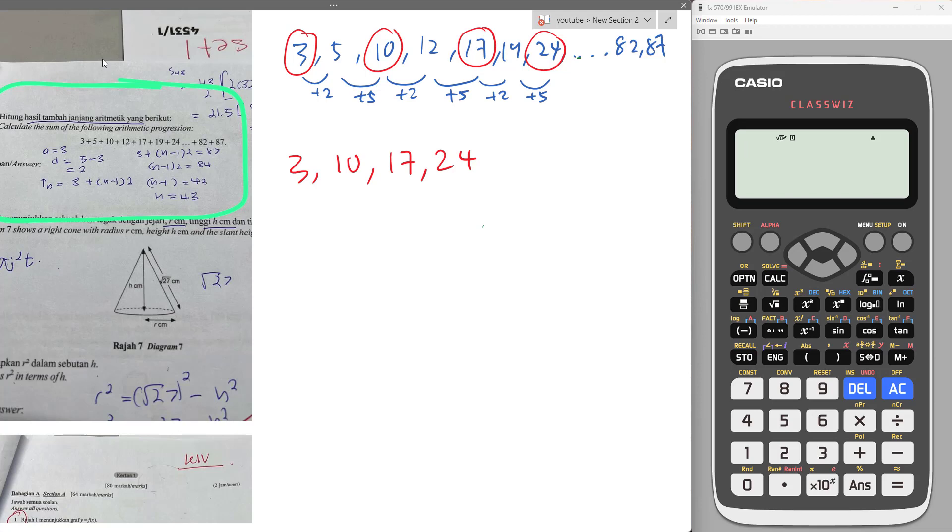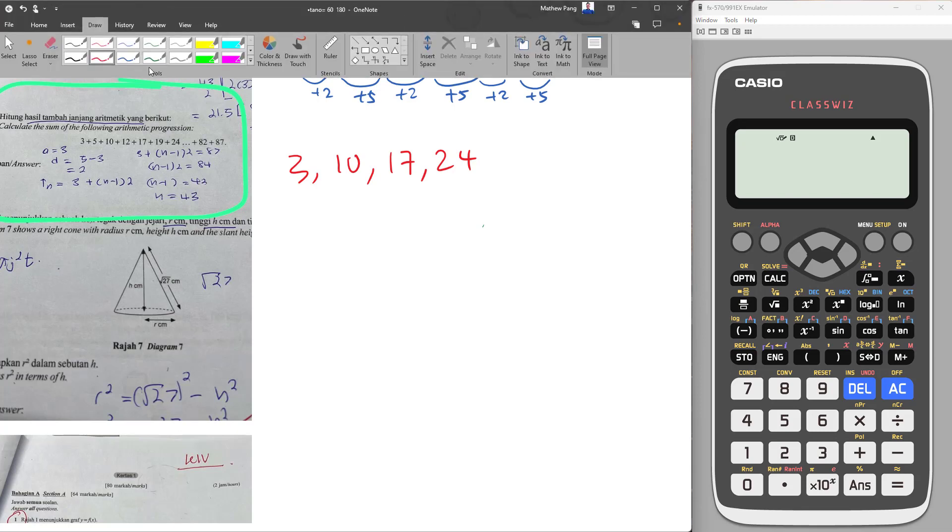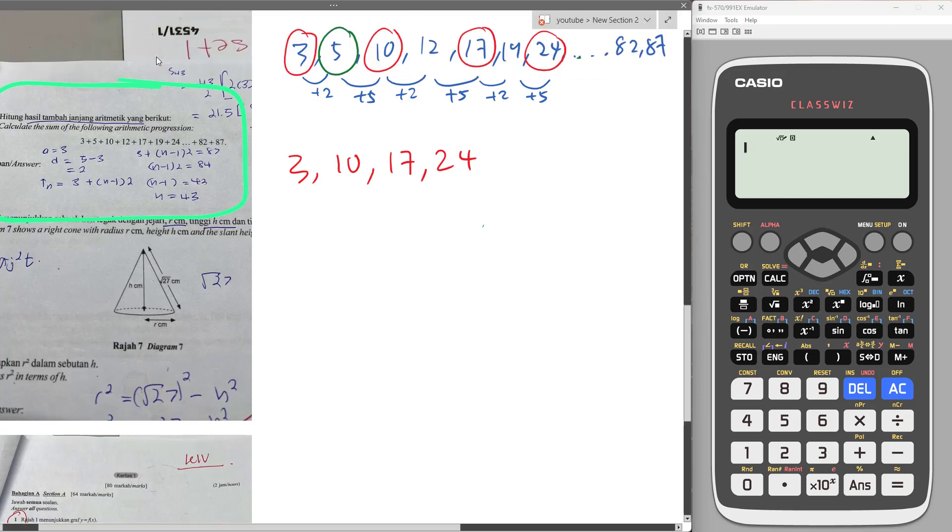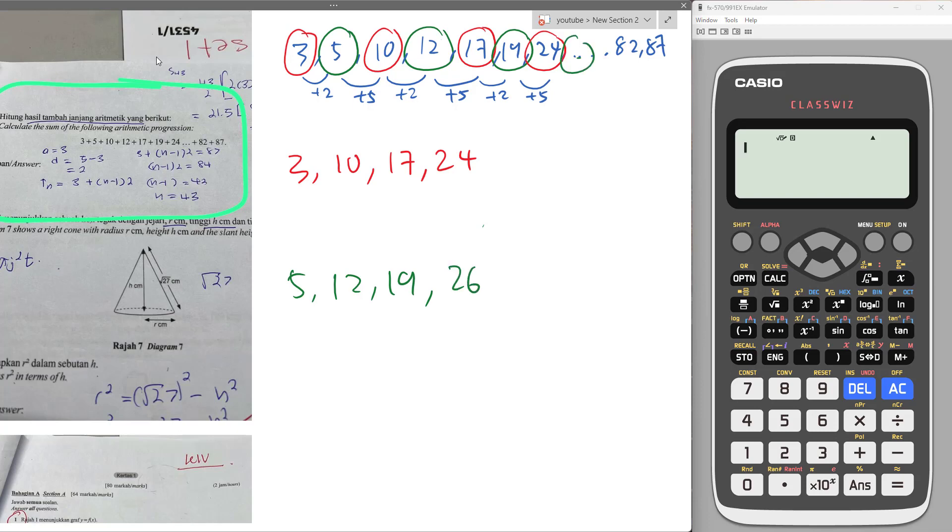Then I would take all the even number here like 5, 12, to form another progression: 5, 12, 19, and then the next one over here, 26. You can see all of them is plus 7 also, right?